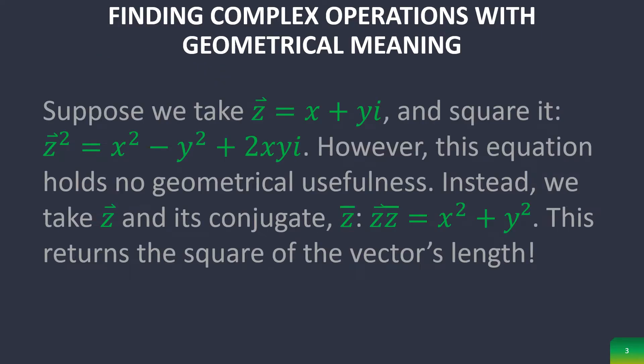Now we use this to find complex operations with geometrical meaning. So just taking a complex number z and squaring it doesn't really produce anything with geometrical usefulness. It doesn't really represent anything. However, if we take z and its conjugate, we realize that we get the square of the vector's length.